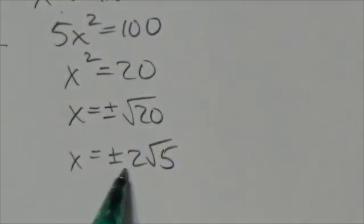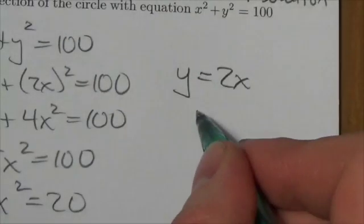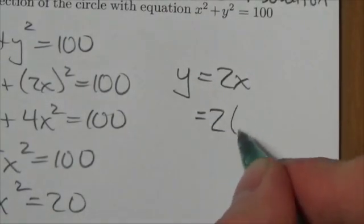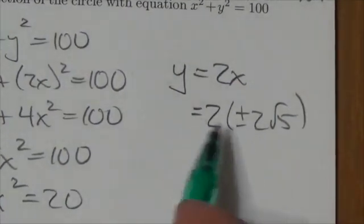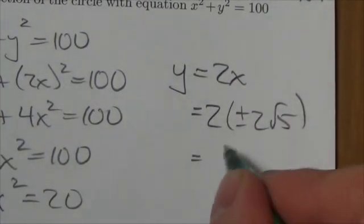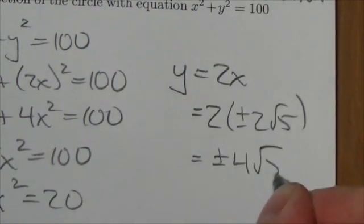So if that's equal to plus or minus 2 root 5, if I plug that in here, plus or minus 2 root 5, and this is kind of an awkward way to do this because you wouldn't normally do this. But when you multiply that through, you're going to get plus or minus 4 root 5.